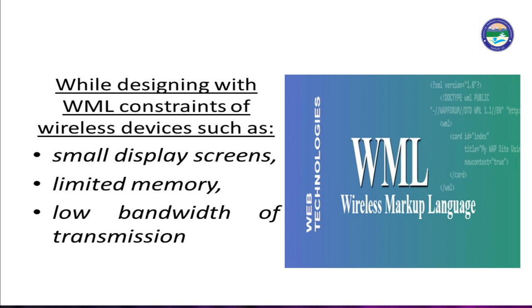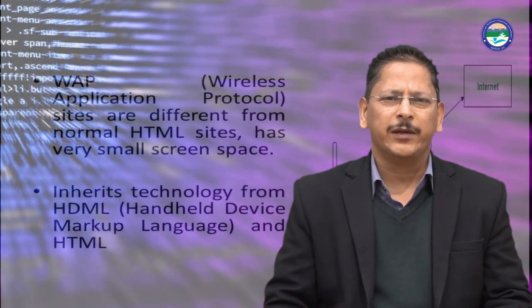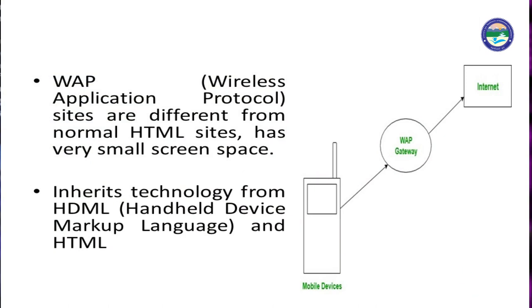Wireless Access Protocol is used for WML. In HTML, we require HTTP — Hypertext Transfer Protocol. For Wireless Markup Language, we require WAP — Wireless Application Protocol. This is the difference between HTTP and WAP. WML sites are different from normal HTML sites and have very small screen space, which is the main point to consider when working with WML.